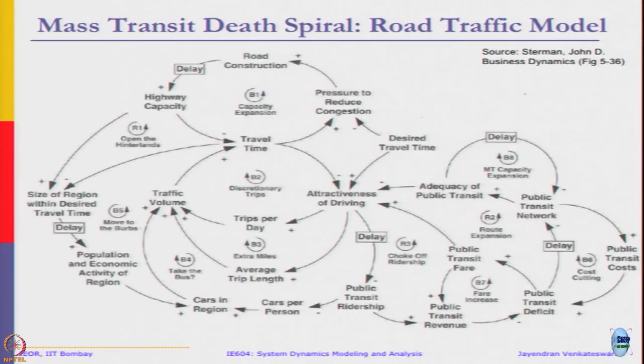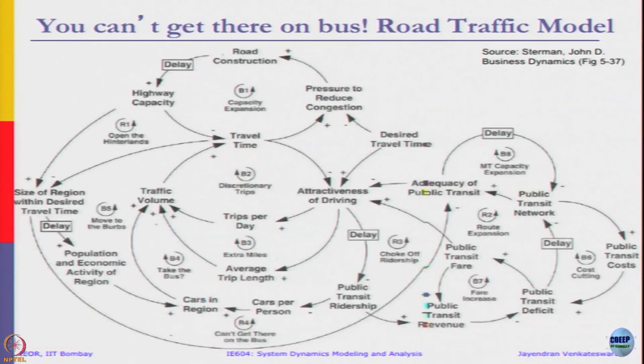There is one more link from this to the next one. The only new addition is this one - size of region within travel time. As it increases, it reduces the adequacy of public transit. People have already started occupying and doing something in Dombivli, but there is no bus facility there, there is no public transit there, but already that has expanded. Then that will force you to buy vehicles. As soon as new region comes and buses are not even connected there, that means it has already become inadequate. That is the 'you cannot get there on the bus' loop.